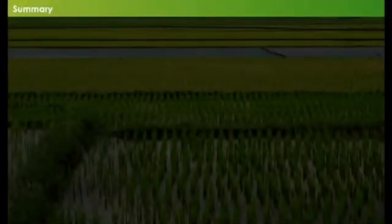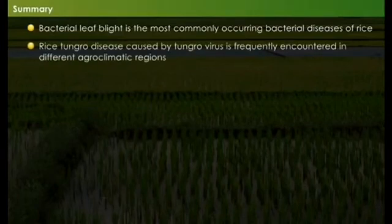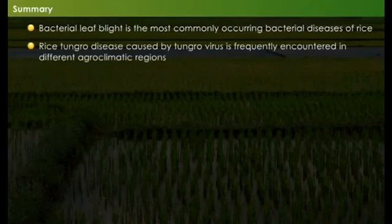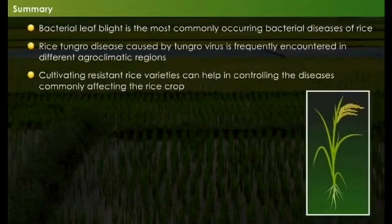Summary: bacterial leaf blight is the most commonly occurring bacterial disease of rice. Rice tungro disease, caused by tungro virus, is frequently encountered in different agro-climatic regions. Cultivating resistant rice varieties can help in controlling the diseases commonly affecting rice.